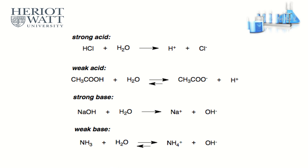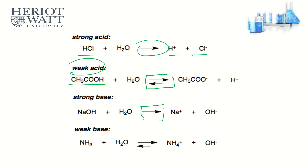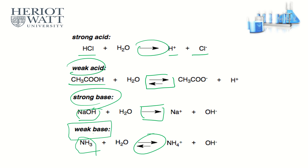More examples: HCl fully dissociates — complete reaction — so it's a strong acid. A reversible equation means it's a weak acid. A complete reaction for a base means strong base; a reversible reaction means weak base. First, identify whether it's an acid or base; then check whether the arrow is complete or reversible to determine strong or weak.